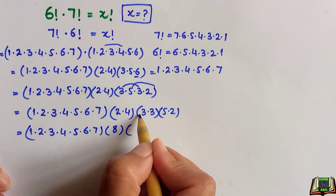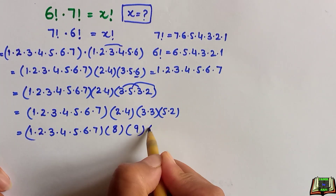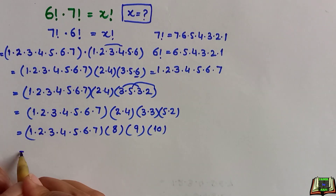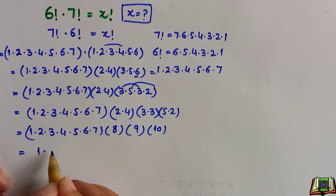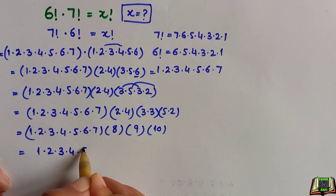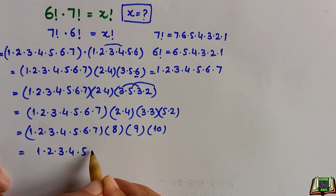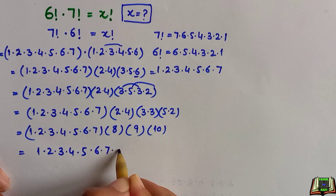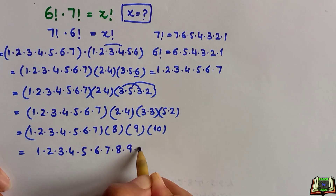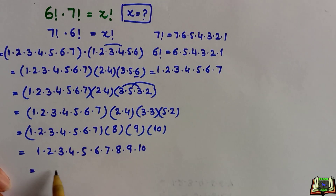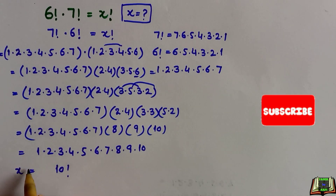Now: 2 × 4 = 8, 3 × 3 = 9, and 5 × 2 = 10. So the full product becomes 1 × 2 × 3 × 4 × 5 × 6 × 7 × 8 × 9 × 10, and that is why this equals 10 factorial.